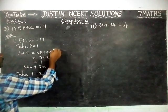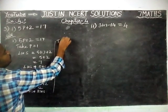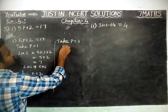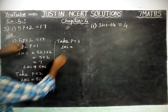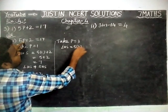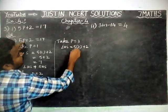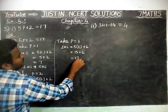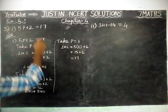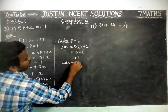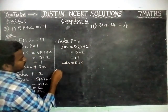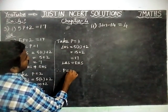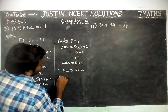Now we are going to take P value is equal to 3. Left hand side, LHS is equal to 5 into 3 plus 2 is equal to 15 plus 2 is equal to 17. Here, LHS is equal to RHS. Therefore, P equal to 3 is a solution.